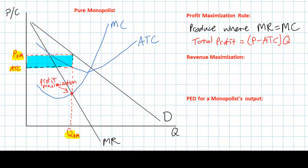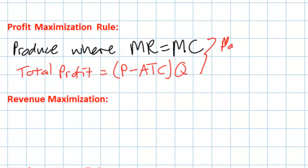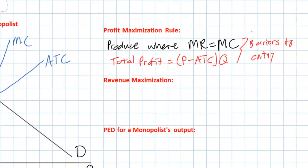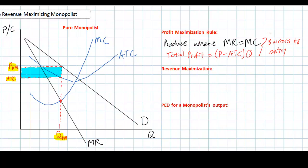By producing at QPM the firm maximizes its total profits. We can see that a purely monopolistic seller has a better chance of earning economic profits in the long run because those profits cannot attract new firms. In pure competition, profits attract new firms whose entry reduces the price and eliminates profits. But due to barriers to entry — economies of scale, legal barriers, ownership of essential resources — a monopolist can maintain economic profits in the long run as long as demand remains strong and costs remain relatively small.